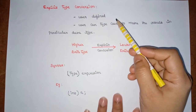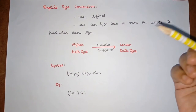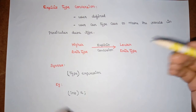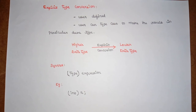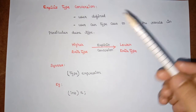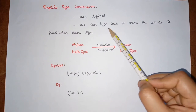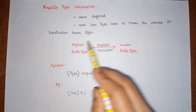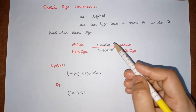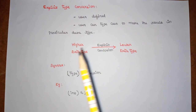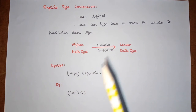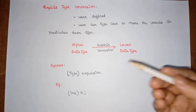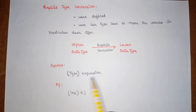The next is explicit type conversion. Explicit type conversion is a user-defined one, because here the user is involved in converting from one data type to another data type. Whereas in implicit type conversion there is no involvement of the user, but here the user will be involved. Here we are going to convert a higher data type to a lower data type — that is why we go for explicit type conversion. When we want to convert a higher data type into a lower data type, we need explicit type conversion.